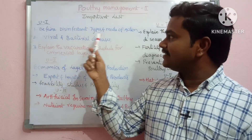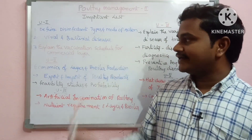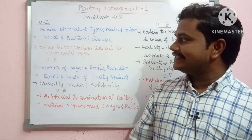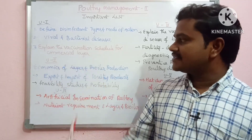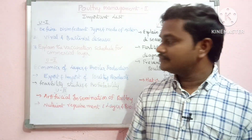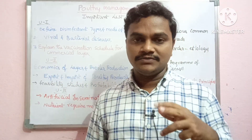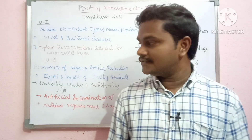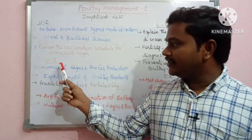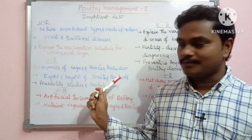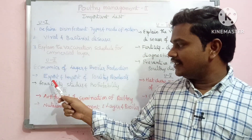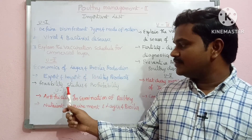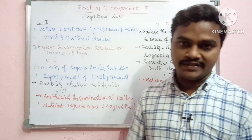Define Disinfectant, types of disinfectant, mode of action, viral and bacterial diseases. Explain the vaccination schedule for the commercial layer — how the commercial layer vaccination is done into the Japan syndrome. Economics of Layer and Broiler Production, Export-Import of Poultry Products, Feasibility Studies and Profitability.